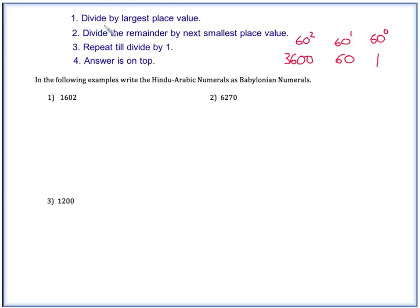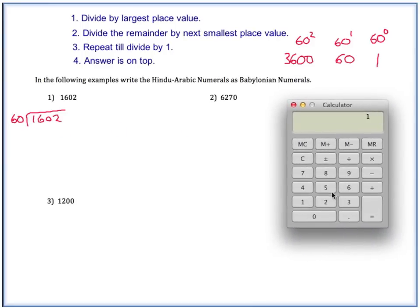The first thing said divide by the largest place value that fits into 1602. So does 3,600 fit into 1602? No, it doesn't. So 60 is the largest one that fits. So you're just going to go 1602 divided by 60. Now I would suggest using a calculator for this. So 1602 divided by 60. And we get 26.7. So only record the whole number there, 26. And that 0.7 is going to be part of our remainder.